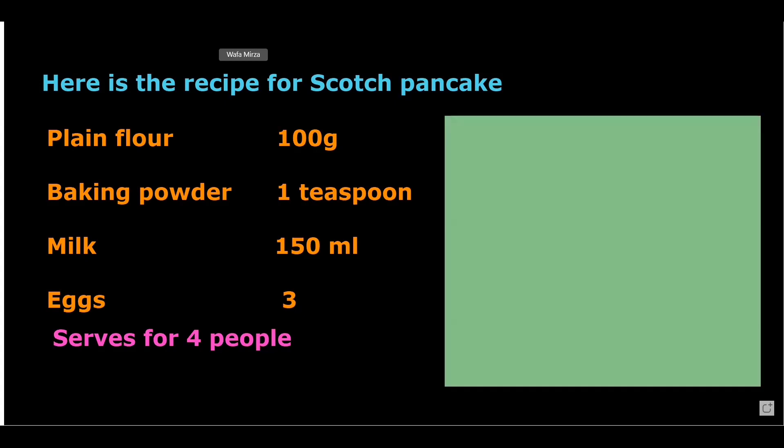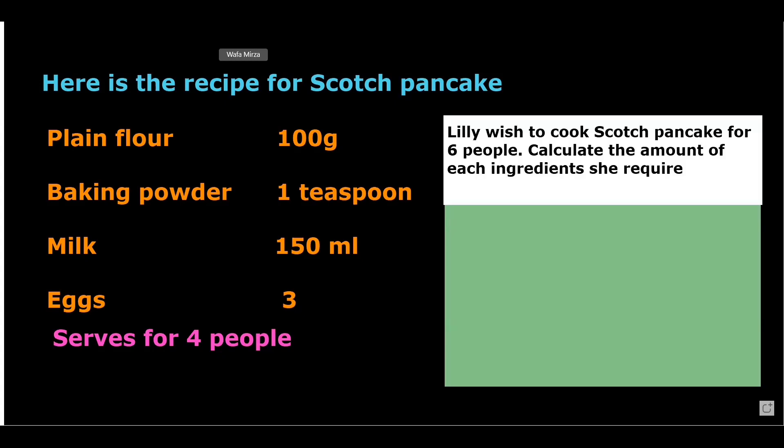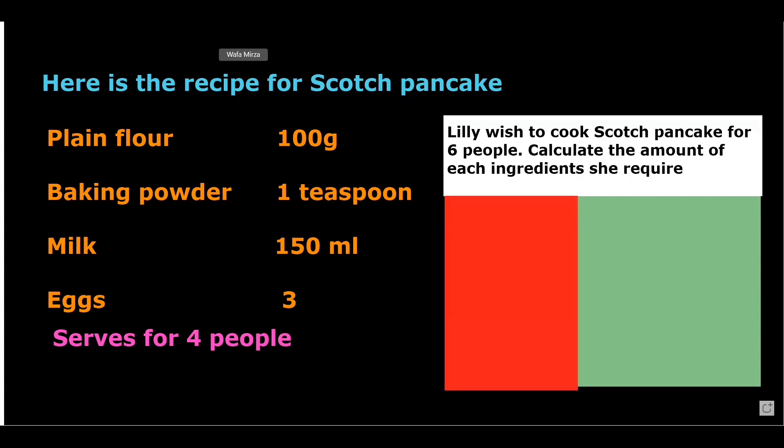Lily wants to cook scotch pancake for 6 people. Using ratios, we have to find the amount of each ingredient she requires to cook scotch pancake for 6 people. For this, first of all, we will find the scale factor.